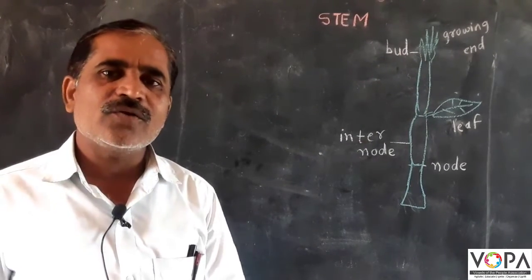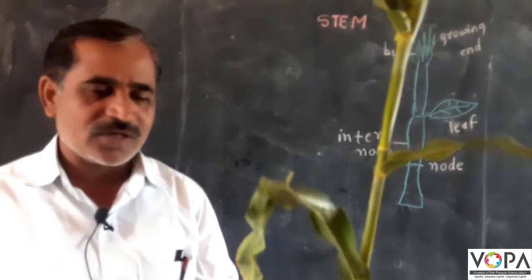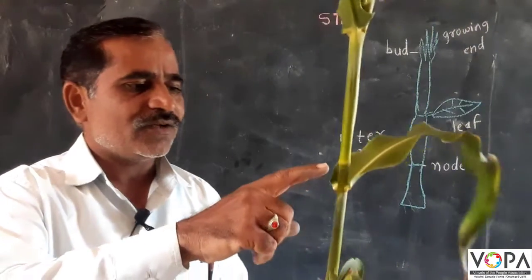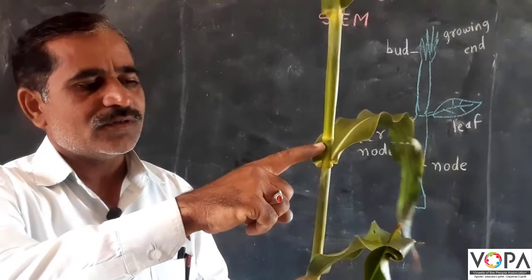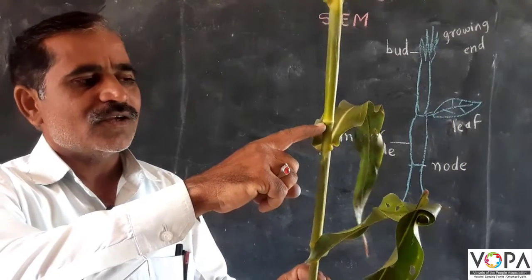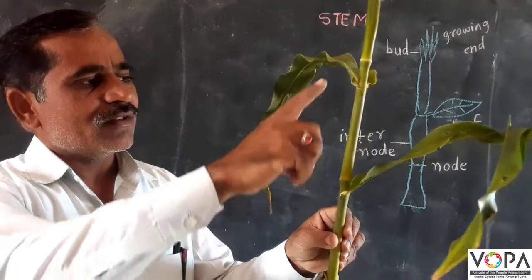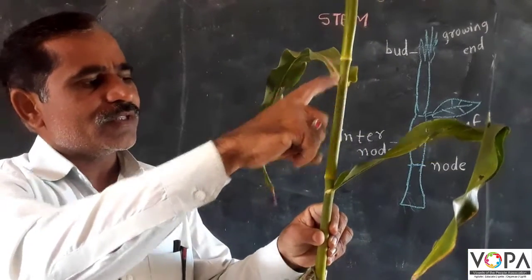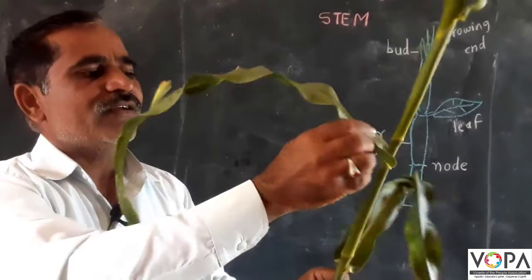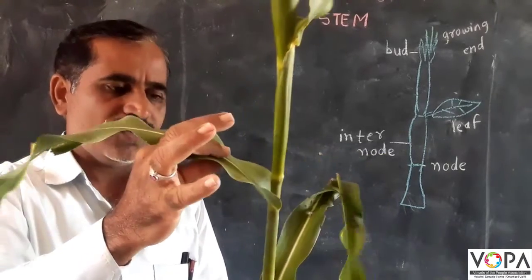In the plant, we are going to see — this is the plant of jar. Here we can see this is the node, and there is another node. The part between these nodes is called the internode, and the leaf grows at the node.